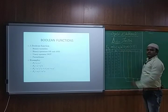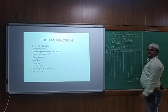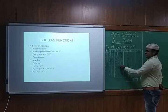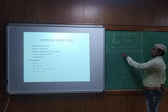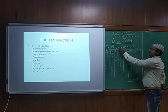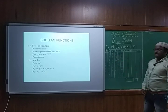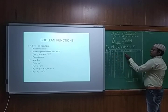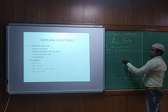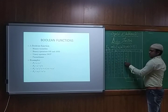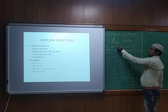Next we need to write x̄ · ȳ by multiplying those two columns. 1·1=1, 1·1=1, 1·0=0, 1·0=0, 0·0=0, 0·0=0, 0·0=0, 0·0=0. Then we multiply x̄ȳ with z to get the first term x̄ȳz. Taking z and this column: 0·1=0, 1·1=1, and all remaining entries are 0. So the first term gives a 1 only at minterm 1.